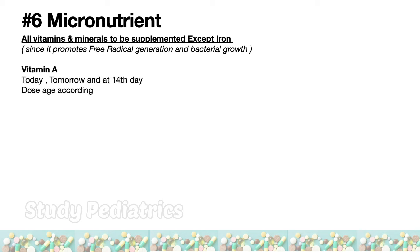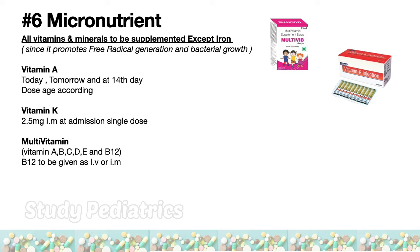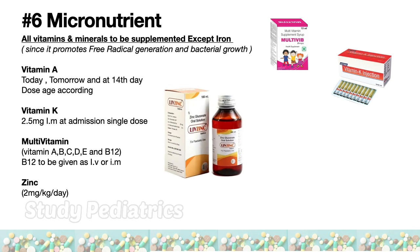Vitamin A is given on day 0, day 1, and day 14. The dose is age-dependent: less than 6 months — 50,000 IU; 6 months to 1 year — 1 lakh IU; more than 1 year — 2 lakh IU. Vitamin K: 2.5 mg IM or IV as a single dose on admission. Multivitamins including A, B, C, D, E, and B12 are given — vitamin B12 can be given IM or IV. Zinc: 2 mg per kg per day as tablet or syrup. Iron is given only after the stabilization phase at 3 mg per kg per day.